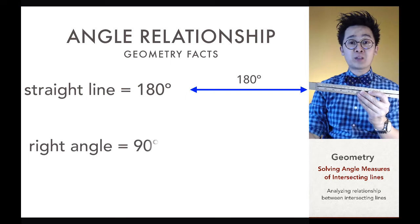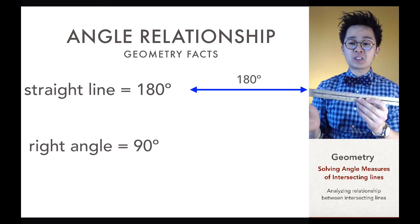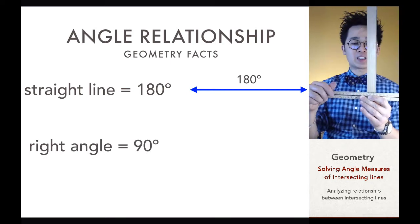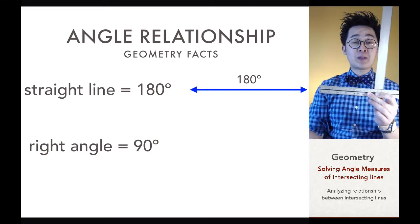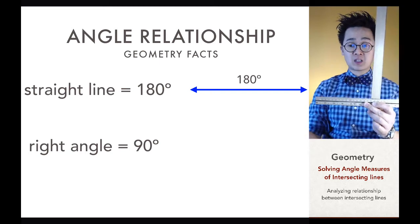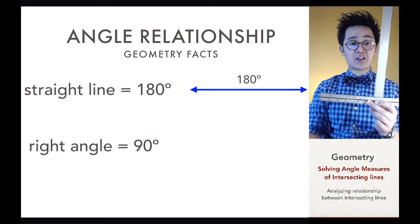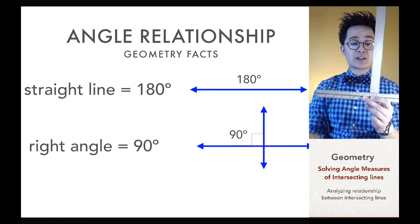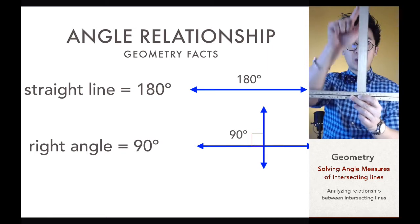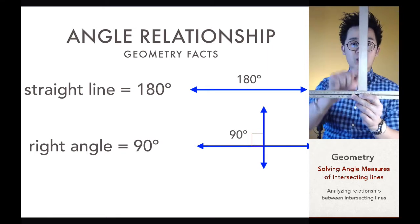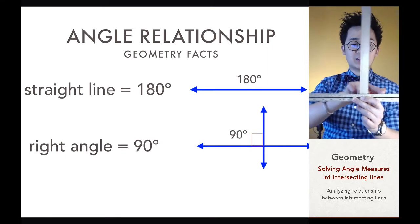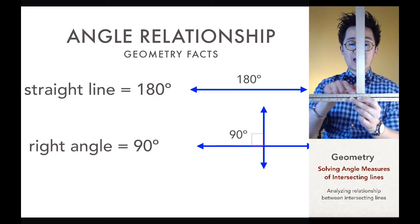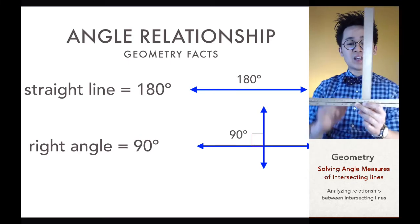Another geometry fact you need to know is that intersecting lines that are perpendicular to each other form a 90-degree angle. So we know that every perpendicular line will have an orthogonal angle, or 90-degree angle, equal to 90 degrees.